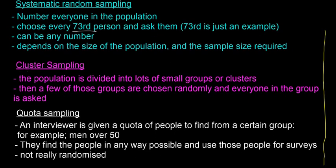Next, we're going to look at cluster sampling. In cluster sampling, the population is divided into lots of small groups or clusters, and then a few of those groups are chosen randomly and everyone in the group is asked. An example could be clustering all the people in Ireland into towns of less than 20,000 people, and then picking a few of those towns and interviewing everyone in them.